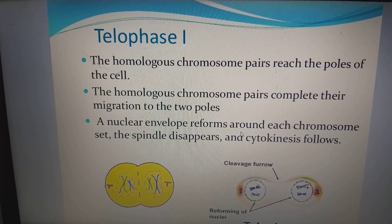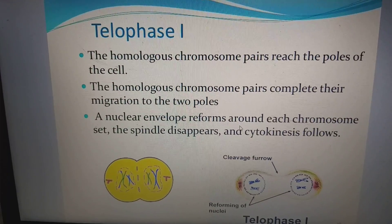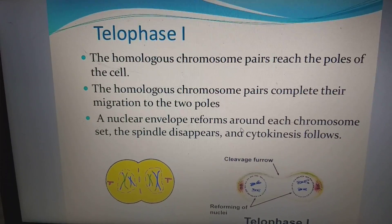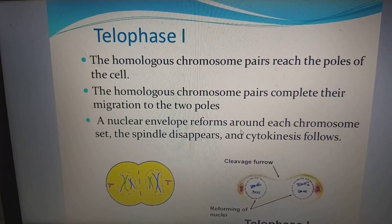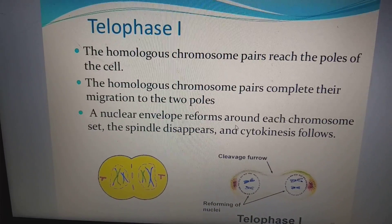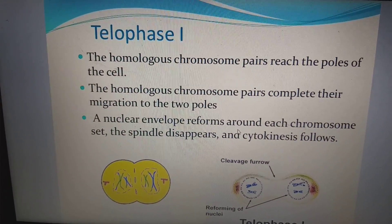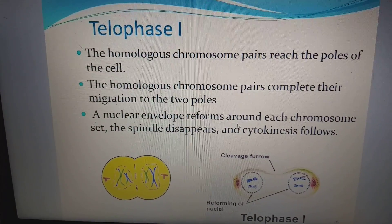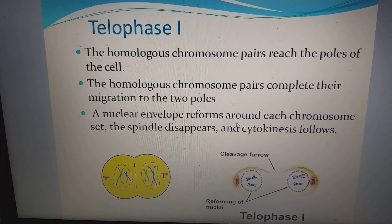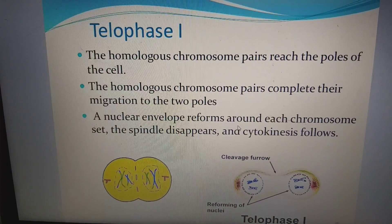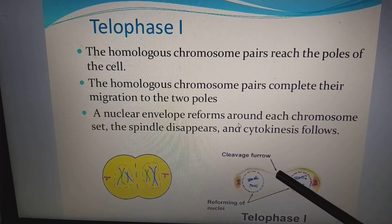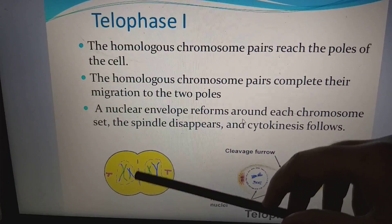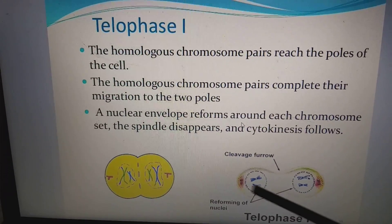In telophase I, the homologous chromosome pairs complete their migration to the two poles. Remember: T for two — two cells remain. A nuclear envelope reforms around each chromosome set, the spindle disappears, and cytokinesis follows. For animal cells, cytokinesis occurs by cleavage furrow; for plant cells, it occurs by cell plate formation.